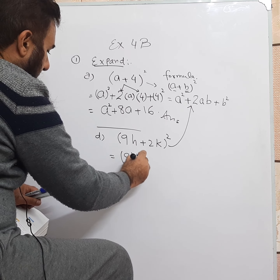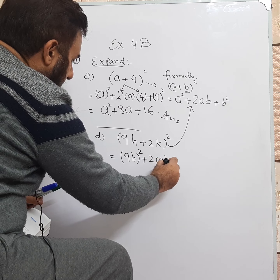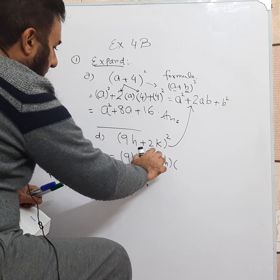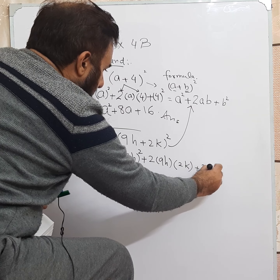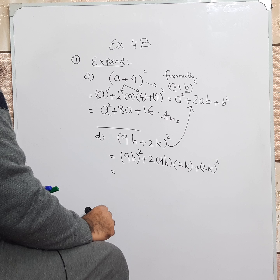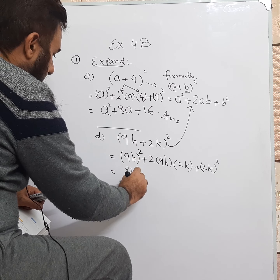We will be expanding this by using the same formula. We take the square of the first term — 9H is the first term, so we take its square. Then we put 2, then the first term 9H multiplied by the second term 2K. Then at the end we need to take the square of the second term, which is 2K.